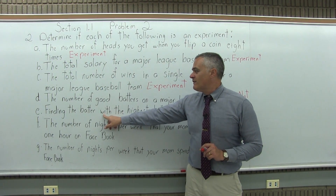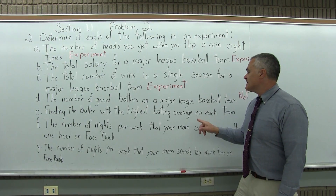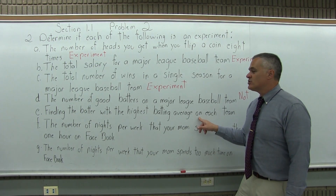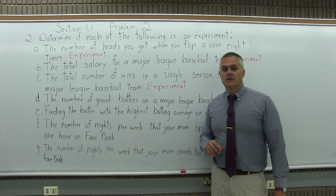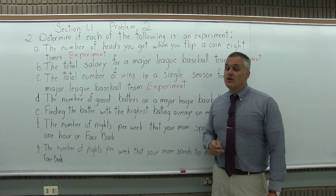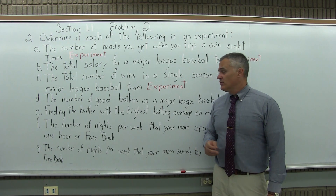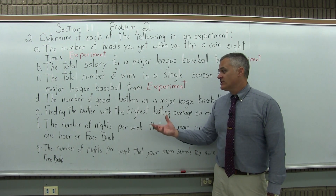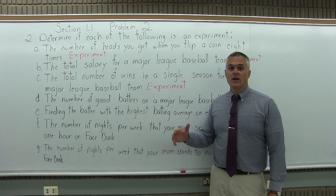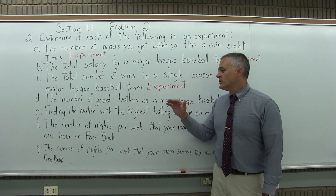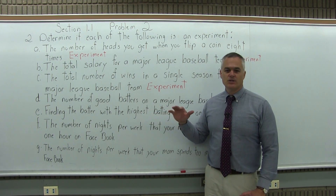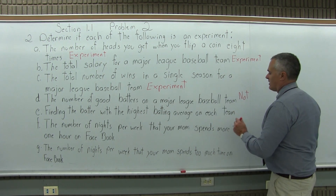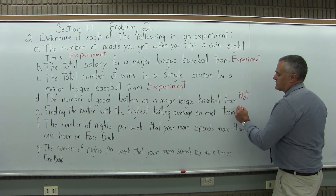Part E: finding the batter with the highest batting average on each team. Does it involve opinion? No. You look at the batting averages — it's strictly a number, say it's .318. Which batter has that average? That's the highest. No opinion involved. So this one is an experiment.